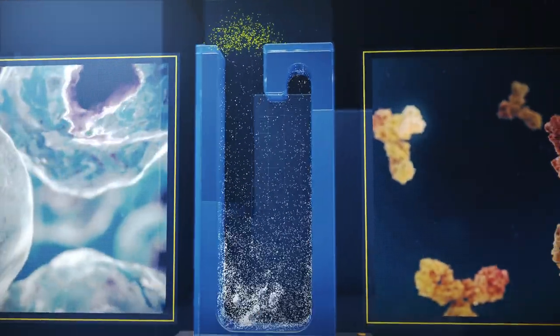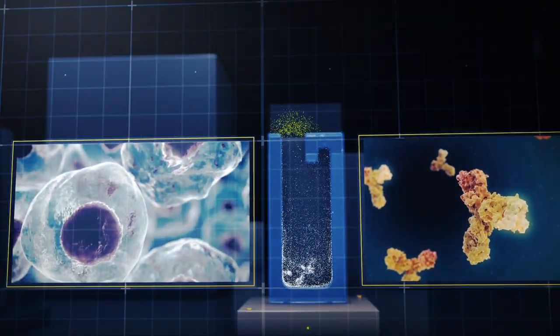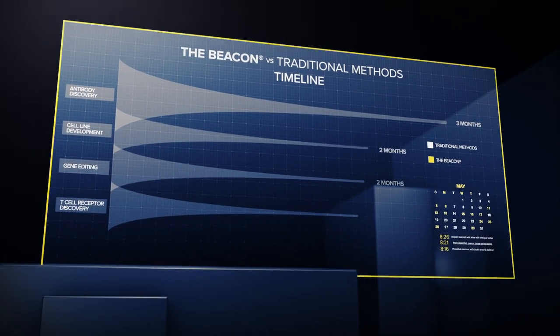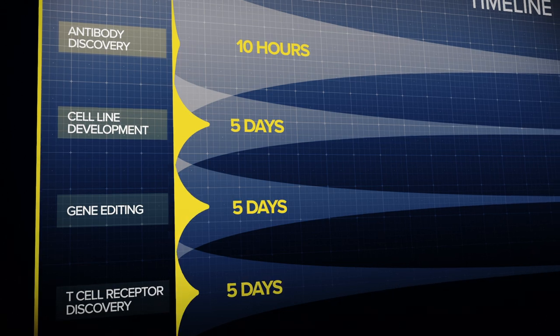This technology has changed how Amgen develops cell lines and searches for antibodies. Research that used to take weeks or months can be done in hours or days.